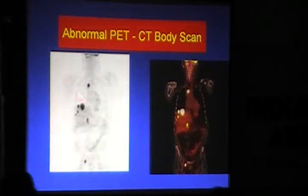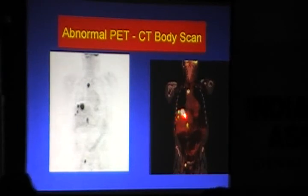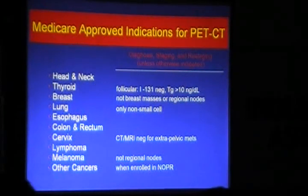This is an abnormal PET-CT. You see focal uptake in the right paratracheal node — a case of squamous lung cancer with liver metastasis. You can see uptake in the liver and uptake in the endo-hilar lymph node. So this is an abnormal PET-CT. Thank you very much.